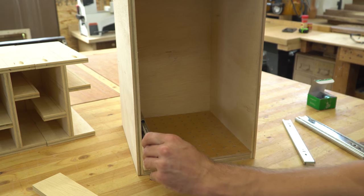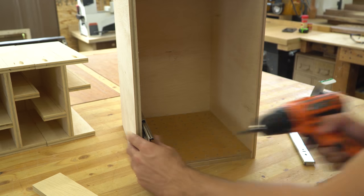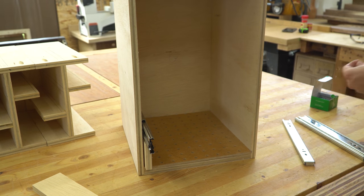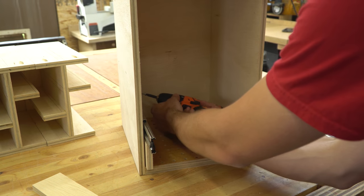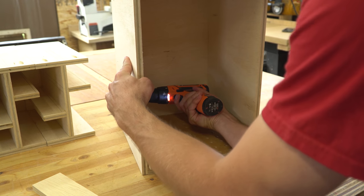With the box standing on one side, I put a thin scrap piece down to space everything away from the wall a little bit. Then, I set a spacer on top of that for the edge of the slide to reference off of. Then, I used short screws to attach the rail to the box.